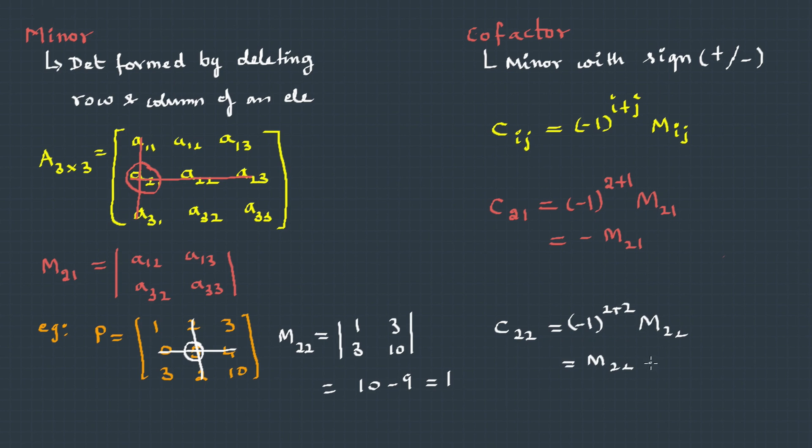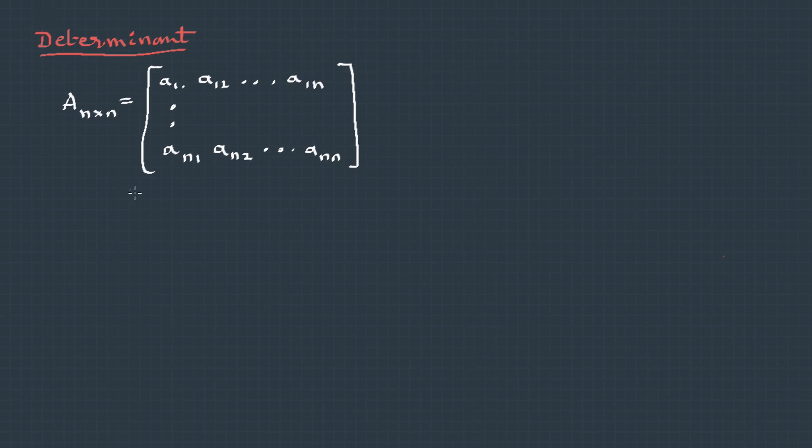Now using this cofactor concept, let's define determinant for a matrix of order n. We can find the determinant as: we can pick up any row or column, let's say we choose one column, take each element, multiply that with its cofactor, and take the summation.